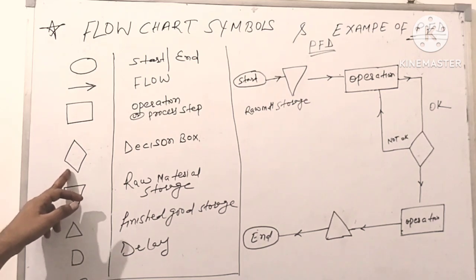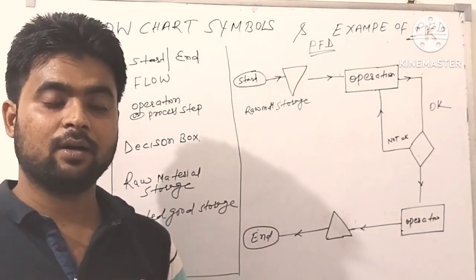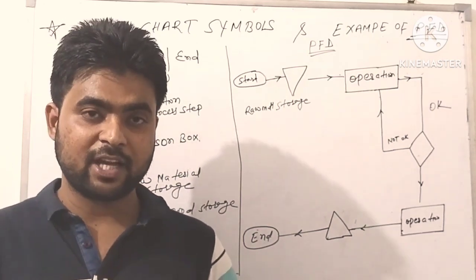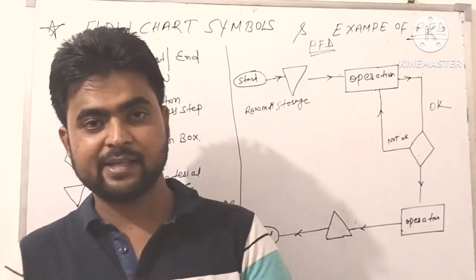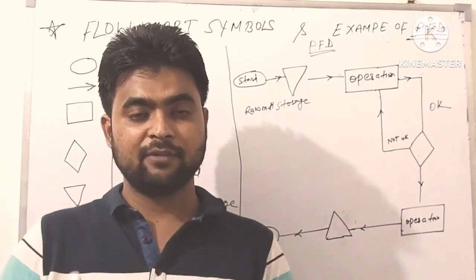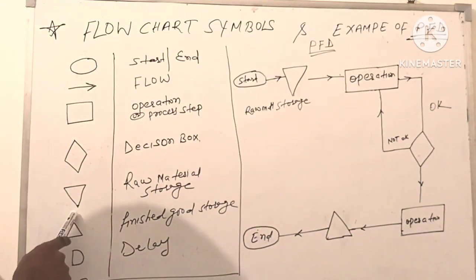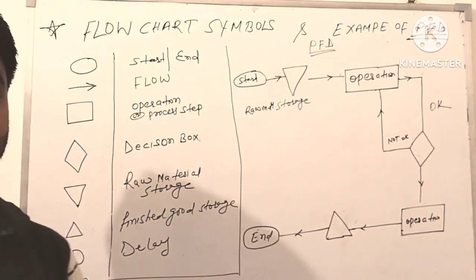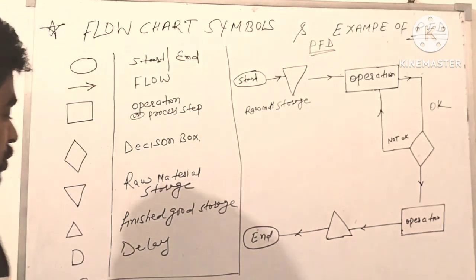The fourth symbol is the decision box — wherever we have to make a decision, we use this box. For example, after a process we check the material: if the material is okay, it will go to the next process; if the material is not okay, it will go back to the same process. The fifth symbol indicates raw material storage — suppose you receive raw material from the supplier, wherever you store the raw materials, you use this symbol.